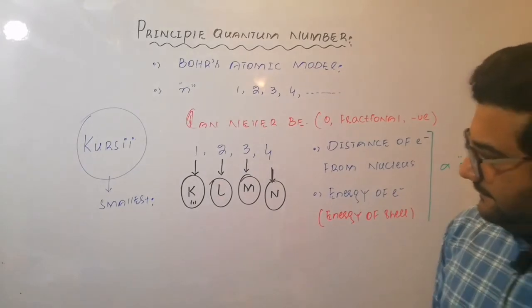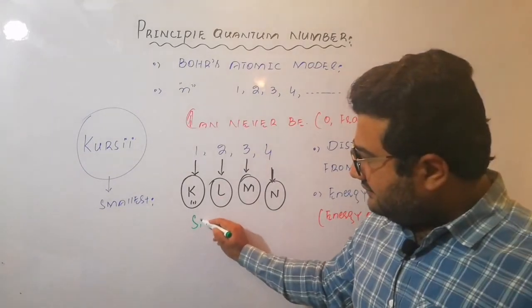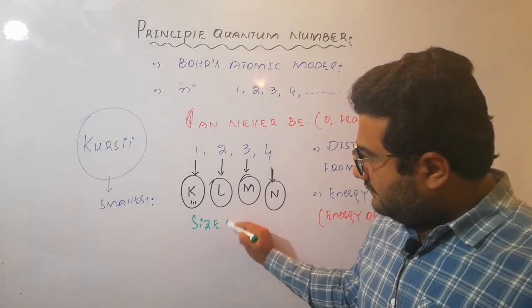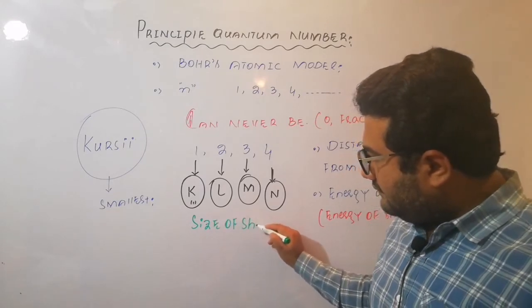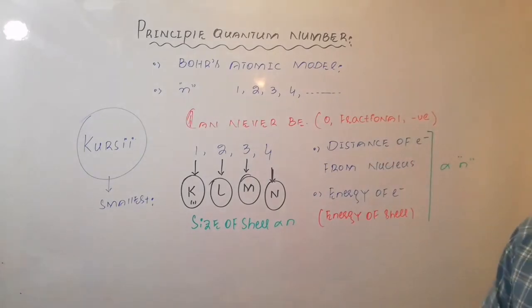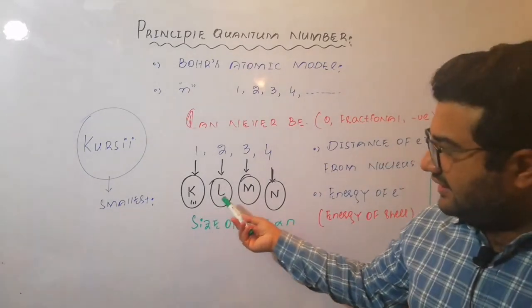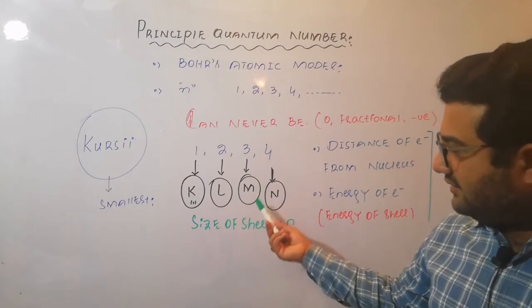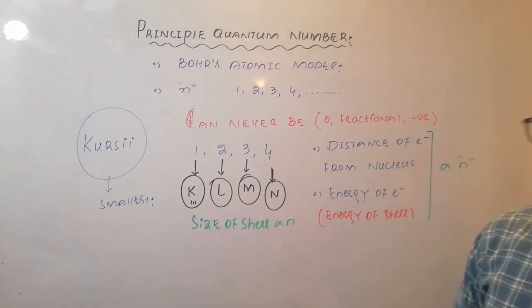Even the size of shell is also directly proportional to n. So K shell is smallest, then L is bigger compared to K, then even bigger, even bigger shells are observed.